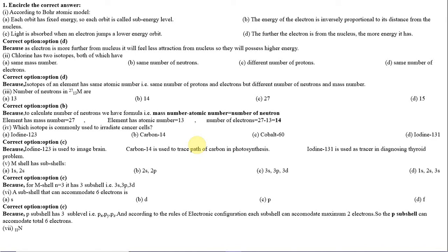Number 7: Sodium (atomic number 11) has electronic configuration. Option A: 1s2 2s2 3s1. Option B: 1s2 2s2 2p7. Option C: 1s2 2s2 2p5 3s2. Option D: 1s2 2s2 2p6 3s1. The correct option is D: 1s2, 2s2, 2p6, 3s1.